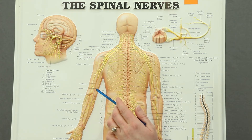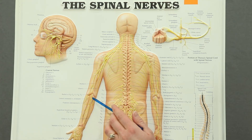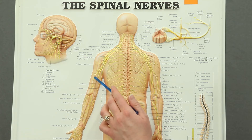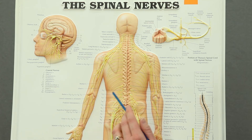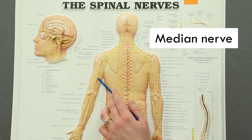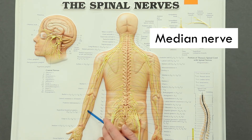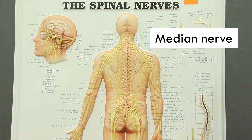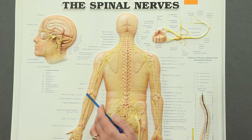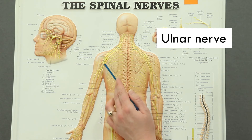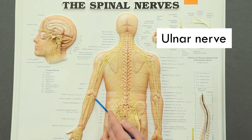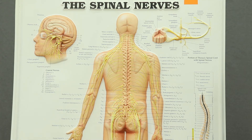On the anterior side, represented by the dotted lines on this poster, we have the median nerve, which comes down the middle of the arm and forearm. The median nerve will innervate pronator teres, palmaris longus, and flexor carpi radialis. The ulnar nerve comes down along the medial side of the arm and forearm, and it innervates flexor carpi ulnaris.